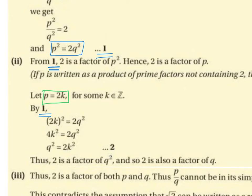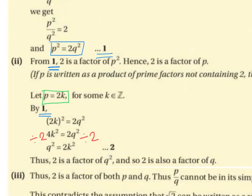So 2k squared equals 2q squared. Now 2 squared is 4, and k squared is k squared, and that's still equal to 2q squared, giving us 4k squared equals 2q squared. Now we solve for q squared — we want to get q squared on its own. We divide both sides by 2, so 4k squared divided by 2 is 2k squared. Therefore q squared equals 2k squared, and this is equation number 2.